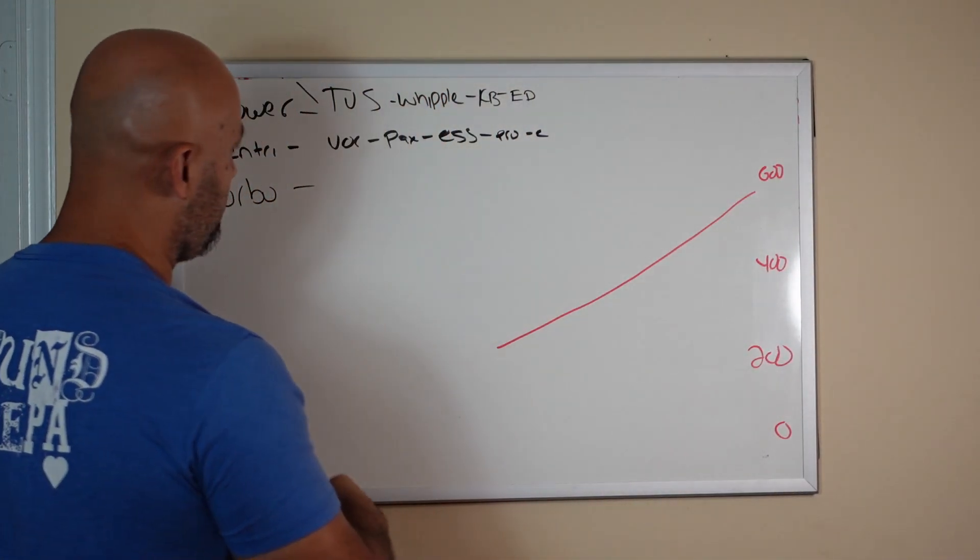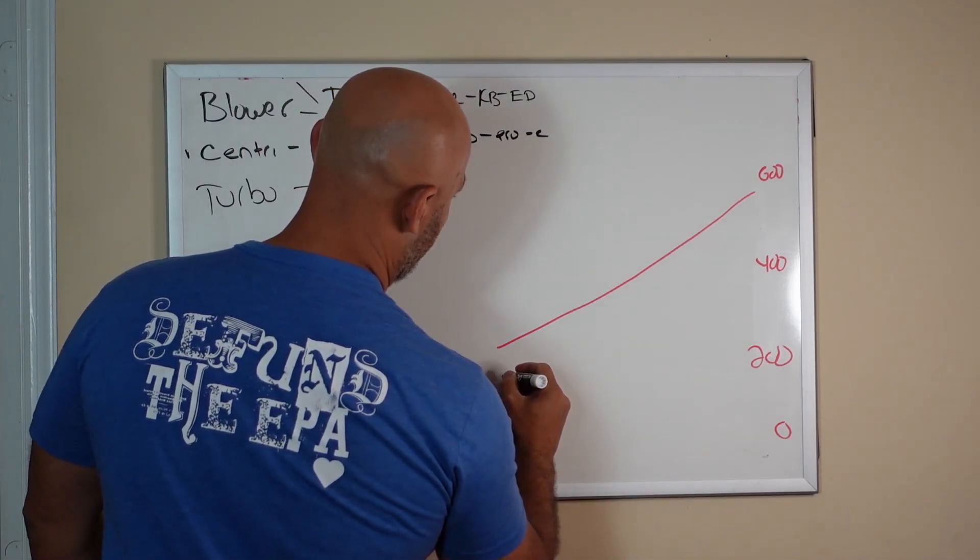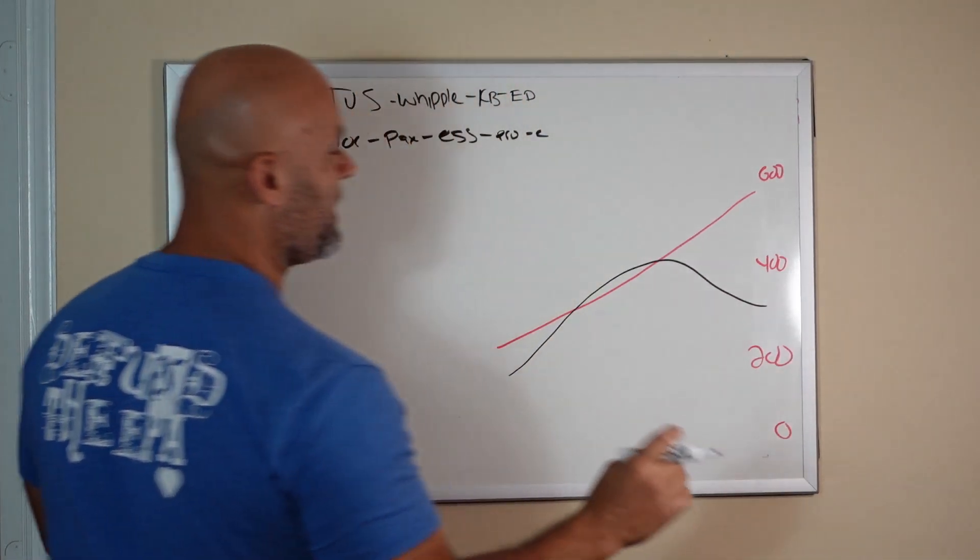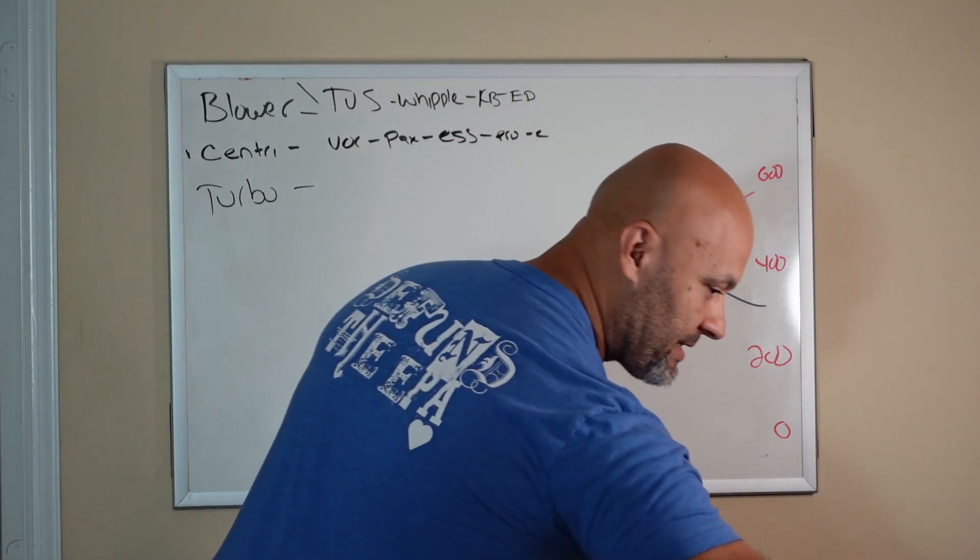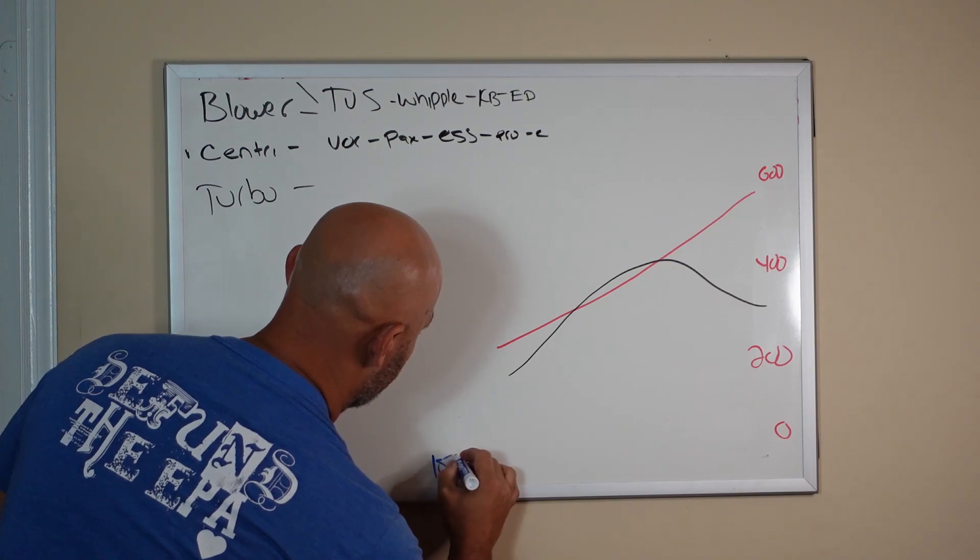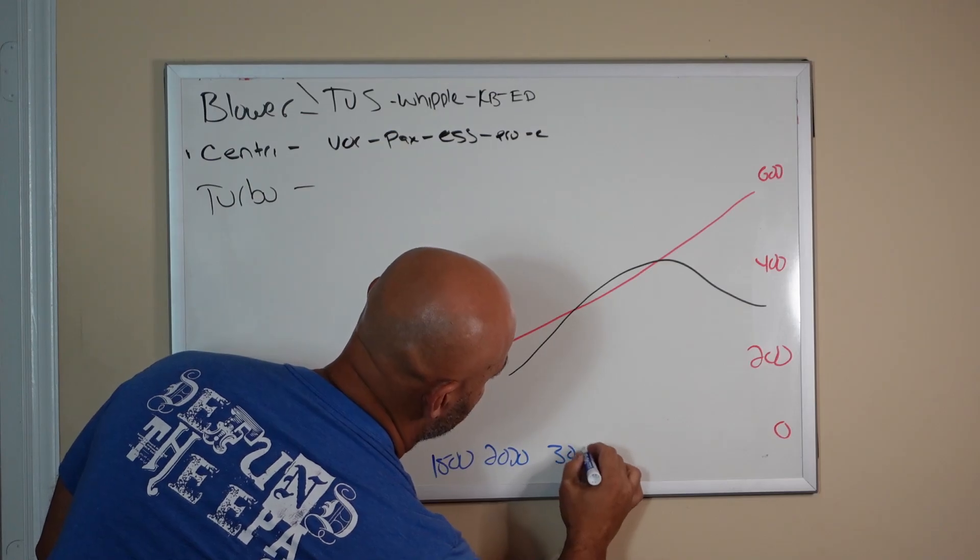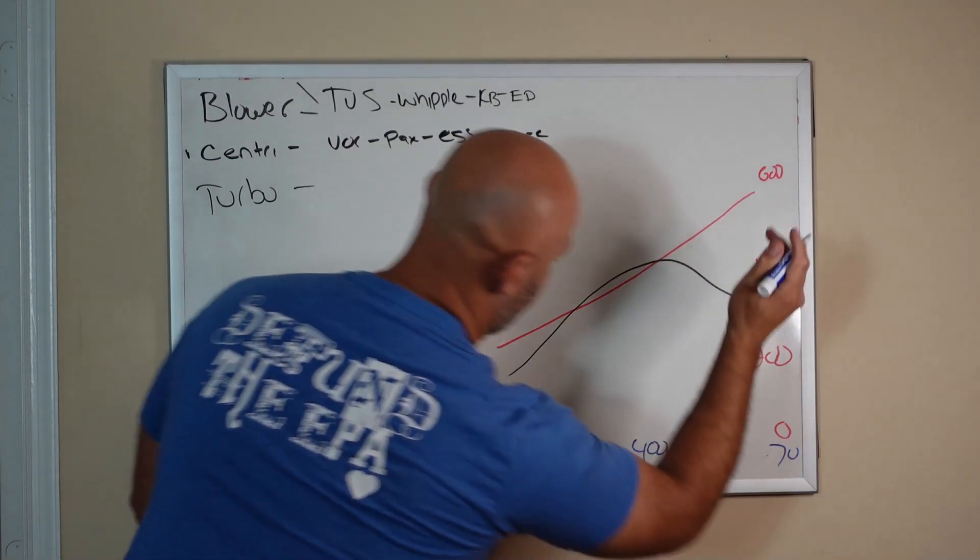With more RPM you see with the centrifugal, typically the more power you make. But torque kind of tends to do this and then it comes down or something like that. So your torque at, let's say this is 1500, 2000, 3000, 4000, let's just say this is 7000, right?